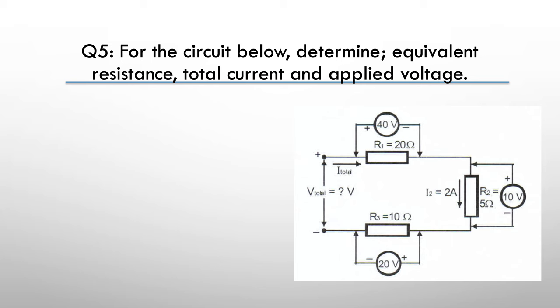Getting a little bit more complicated now. For the circuit below, determine the equivalent resistance, total current and the applied voltage. So pause here and have a think. Our hint is use your ohms law wheel. So get out your textbook or if it's on your equation sheet.